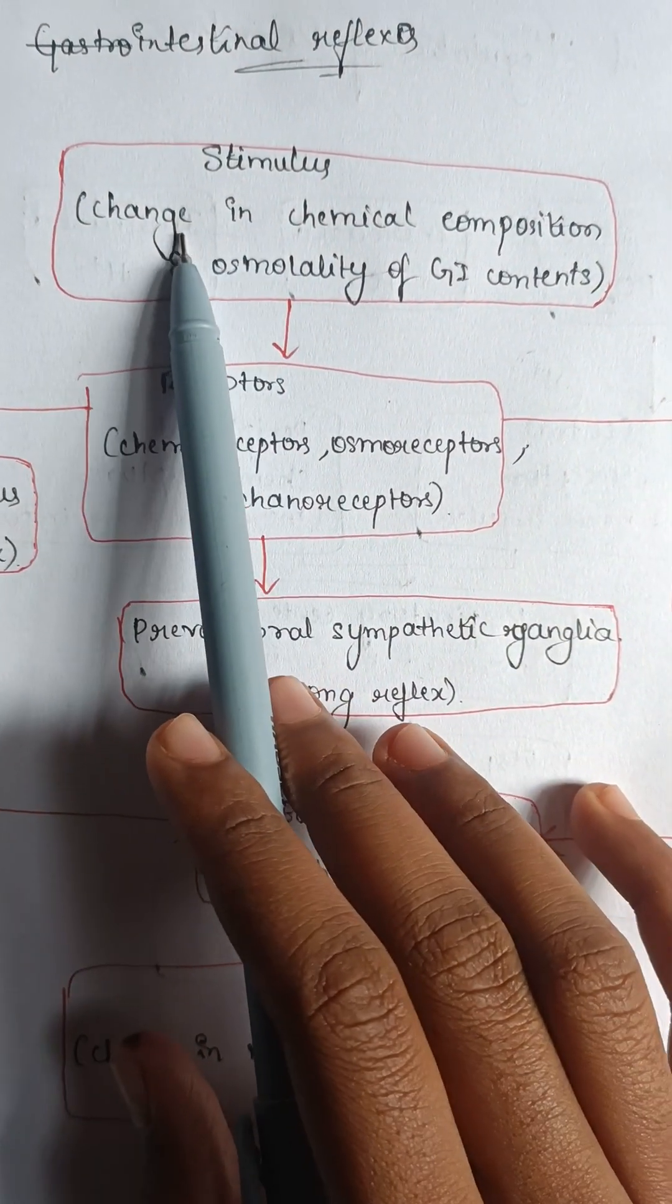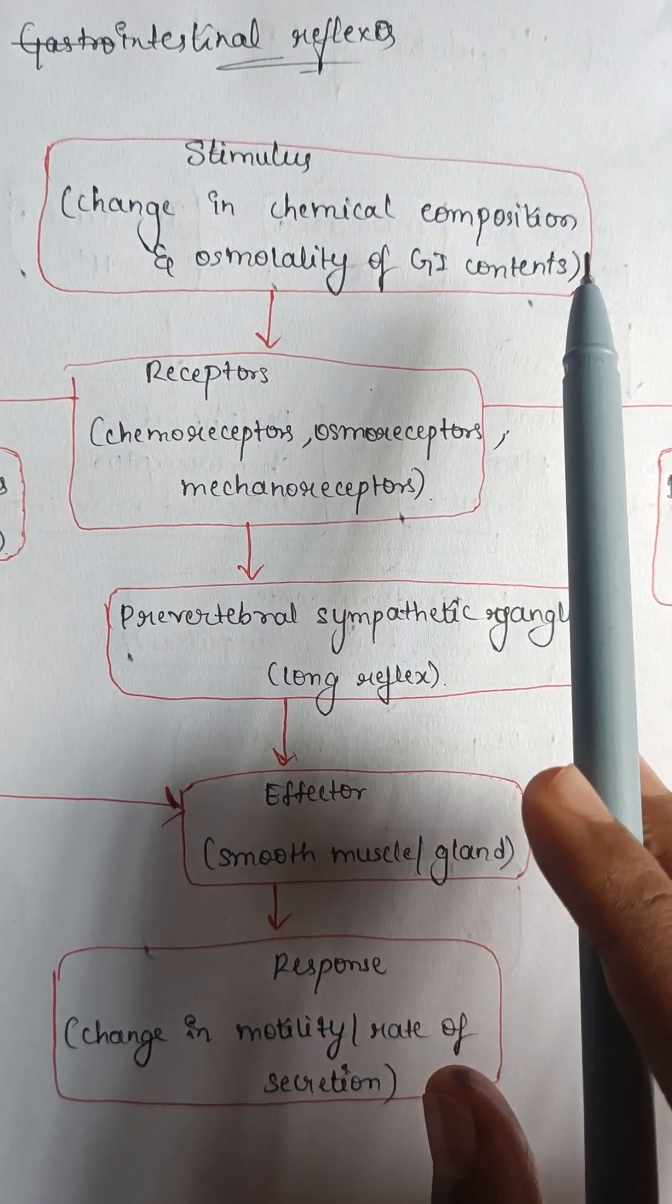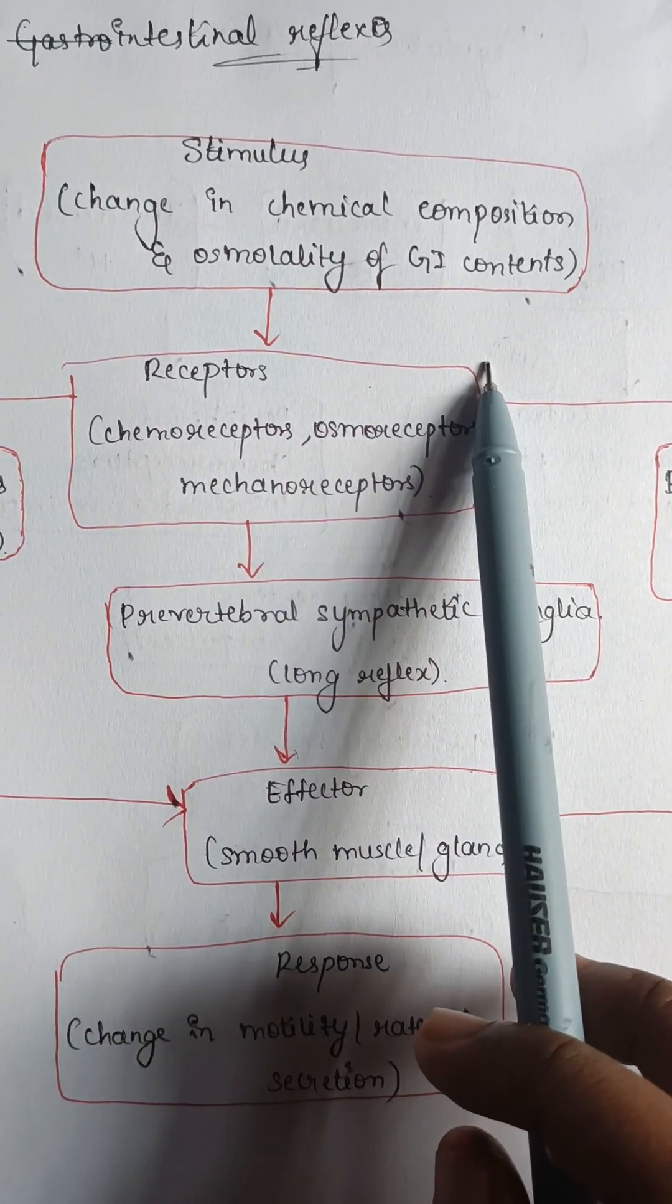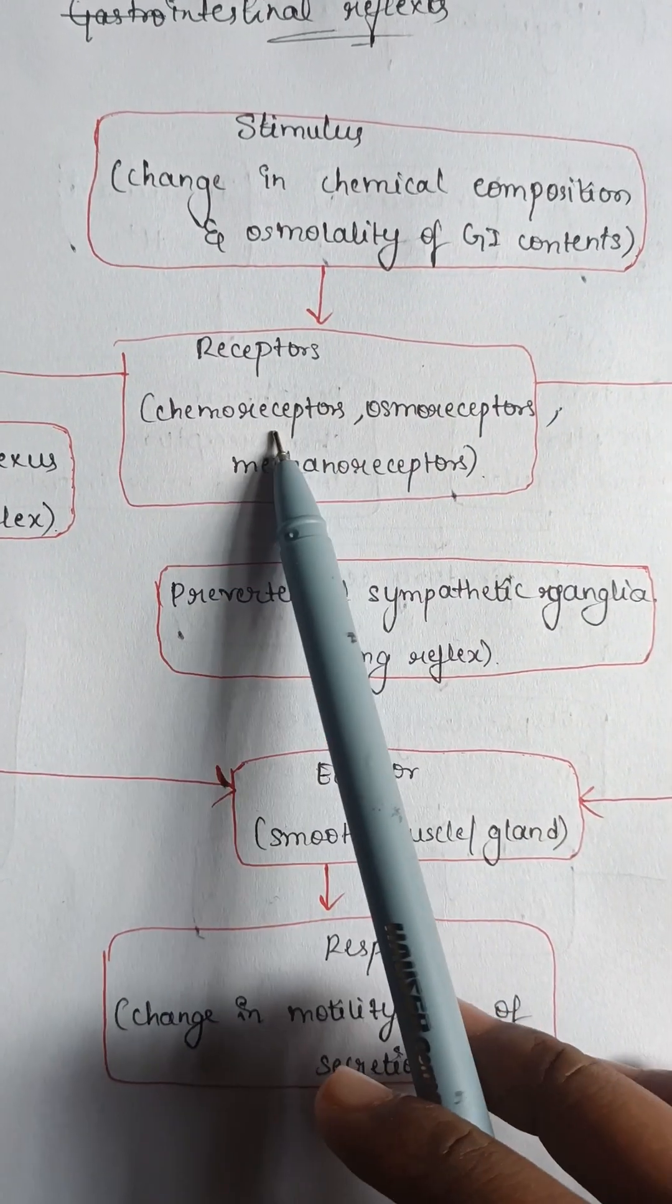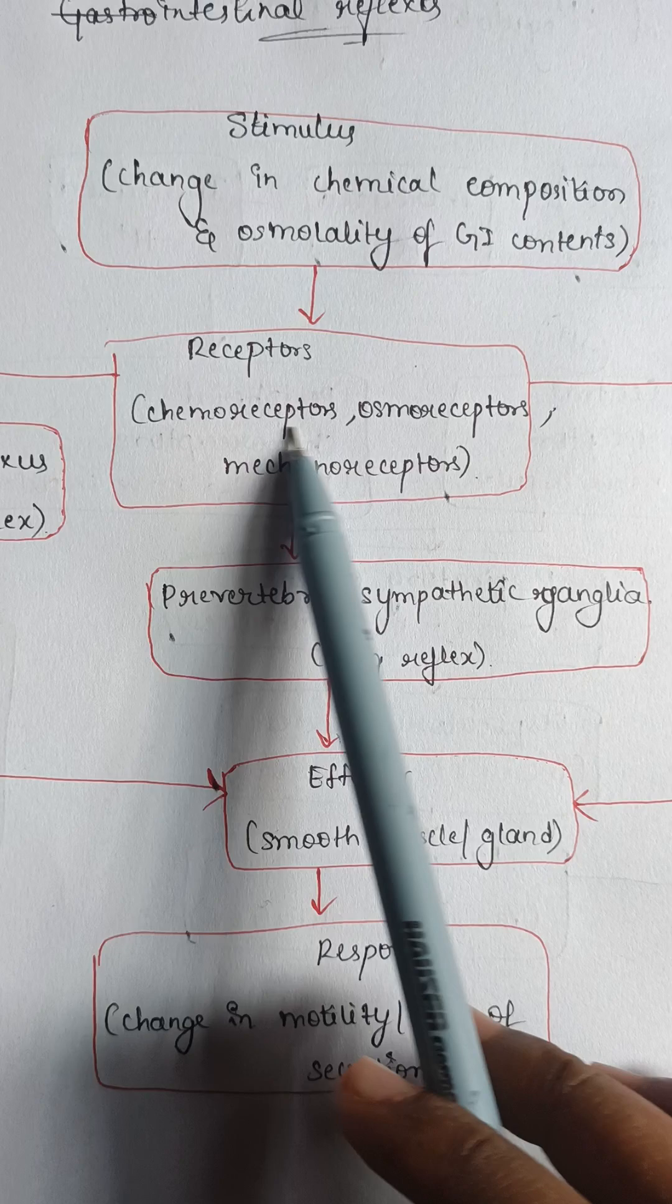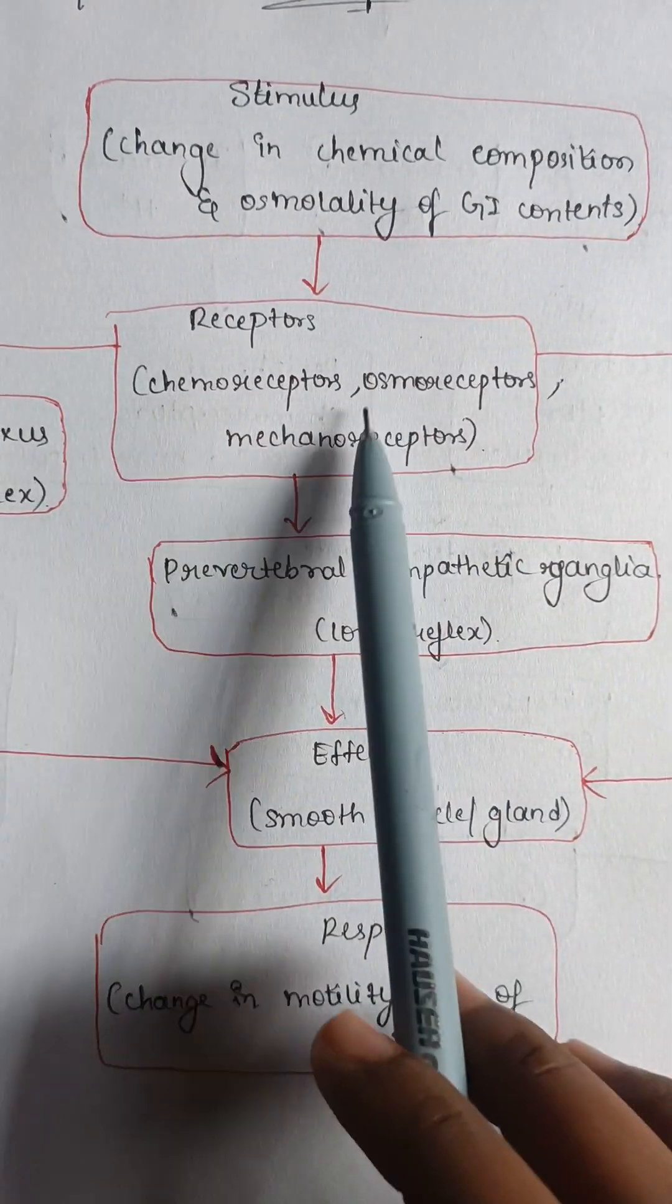First, any change in the chemical composition and osmolarity of the GI contents activates the receptors which are present, that is chemoreceptors, osmoreceptors, and mechanoreceptors.